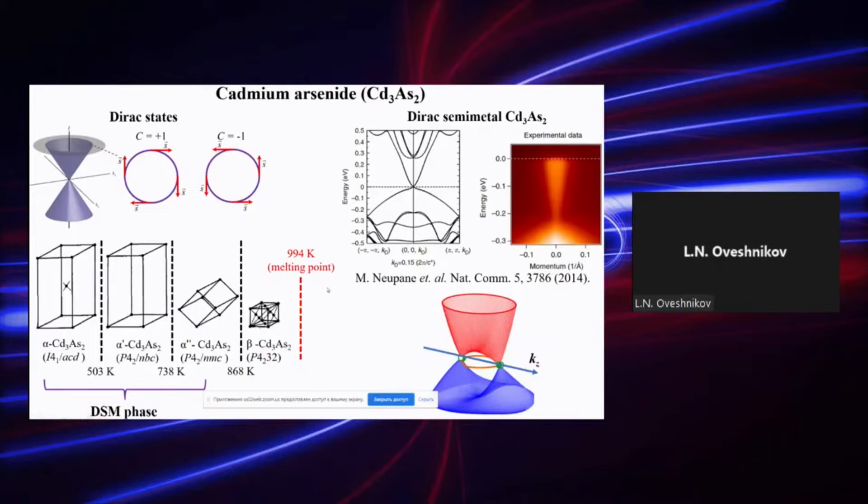The key idea of such studies is that if one combines topological non-trivial system with the superconducting states, there are high chances that this superconductivity can have also topological nature, meaning that it has non-trivial pairing potential, which is quite a hot topic as it can be potentially applied to fault-tolerant quantum computing.